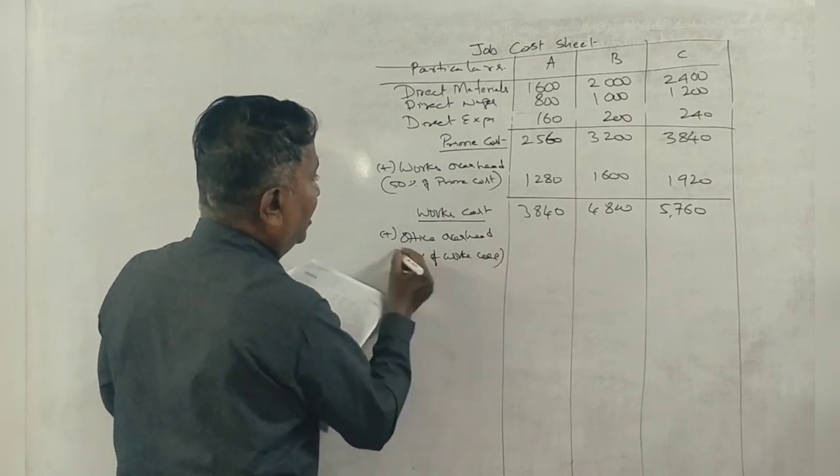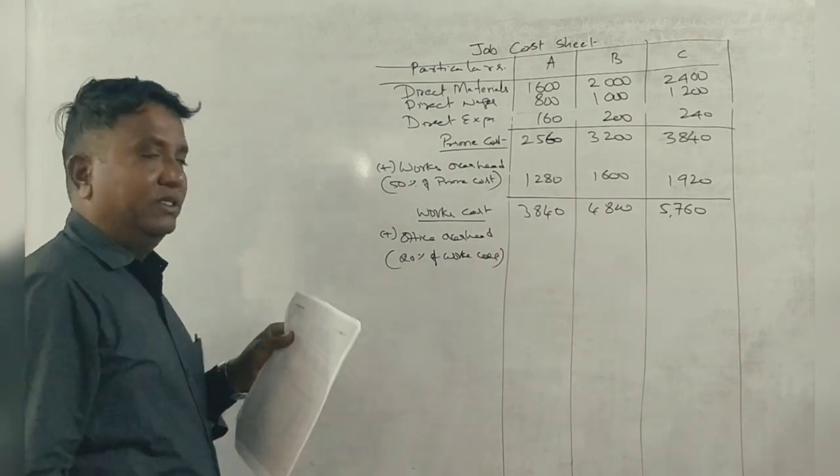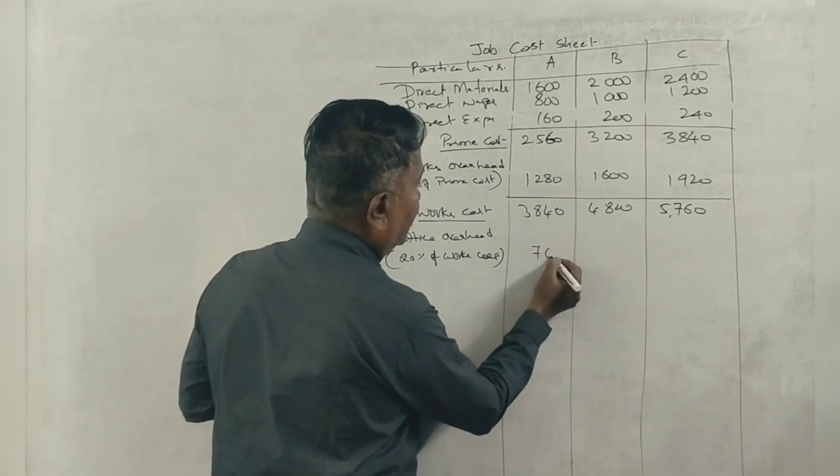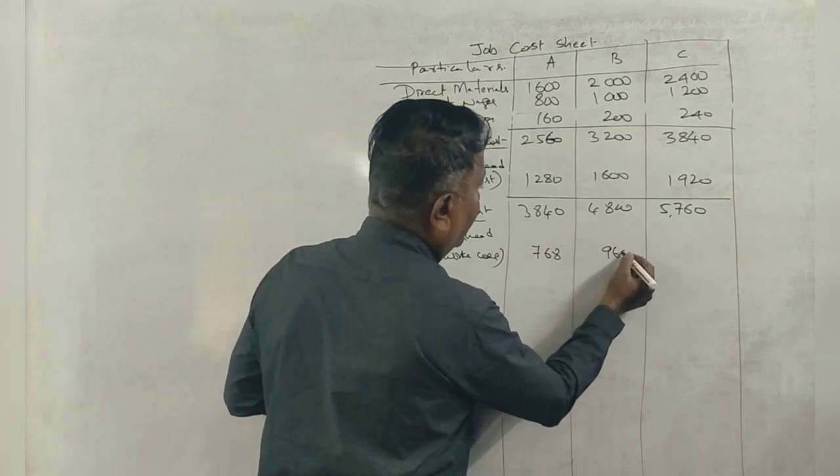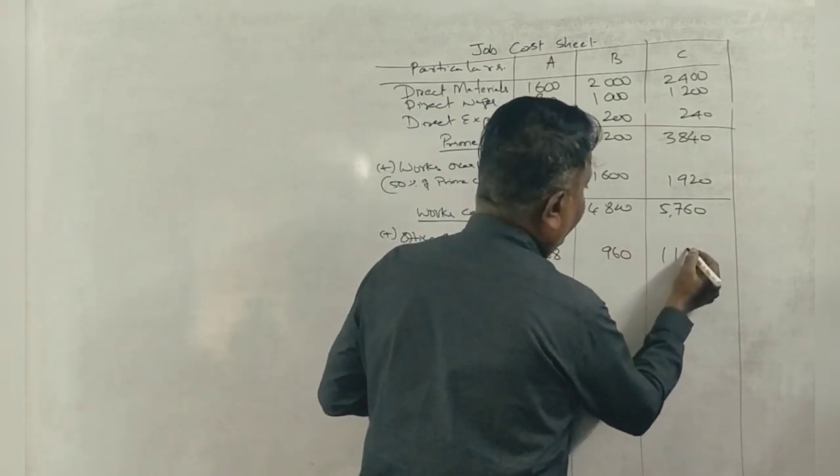Yes. So, 20% for office overhead. 768, 960, and 1,152.